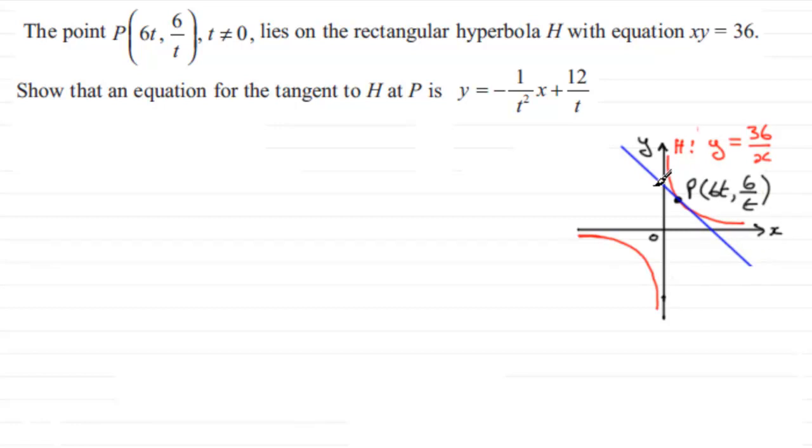To find the equation of this tangent, being a straight line, it will have the form y minus y₁ equals m times x minus x₁. We have our coordinates: x₁ is 6t and y₁ is 6 over t. We just need to get the gradient m.